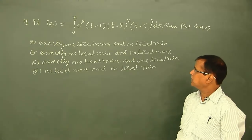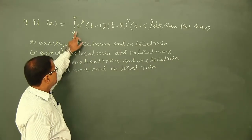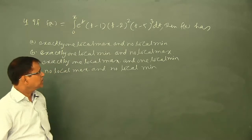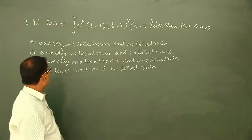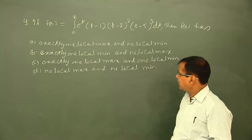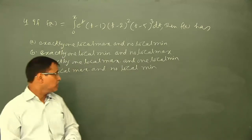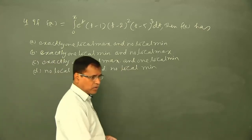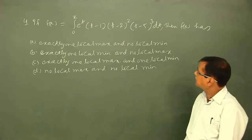Next, problem number four: if f(x) = integral from 0 to x of e^t · (t−1) · (t−2)² · (t−5)³ dt, then f(x) has: exactly one local maximum and no local minimum; exactly one local minimum and no local maximum; exactly one local maximum and one local minimum; or no local maximum and no local minimum.